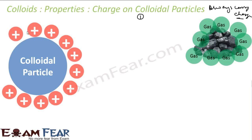The second thing is they all bear an identical charge. For example, in a colloidal solution with millions of colloidal particles, all the particles will have the same charge — maybe all positive or all negative. Because of this, they repel each other. If a particle is neutral, it will settle down. But if it has a positive charge, and another colloidal particle is also positively charged, they repel each other and will not settle down.